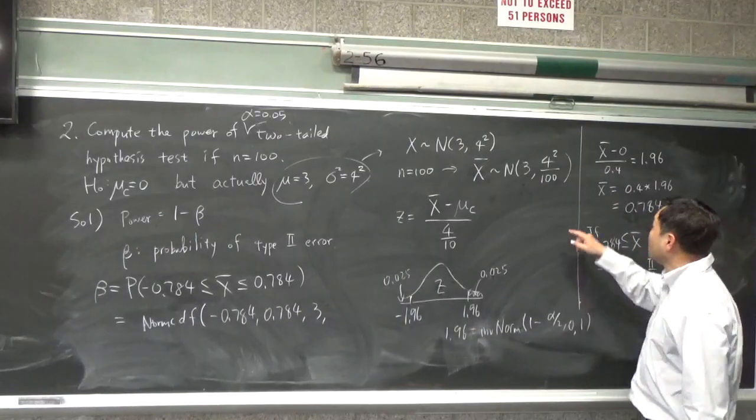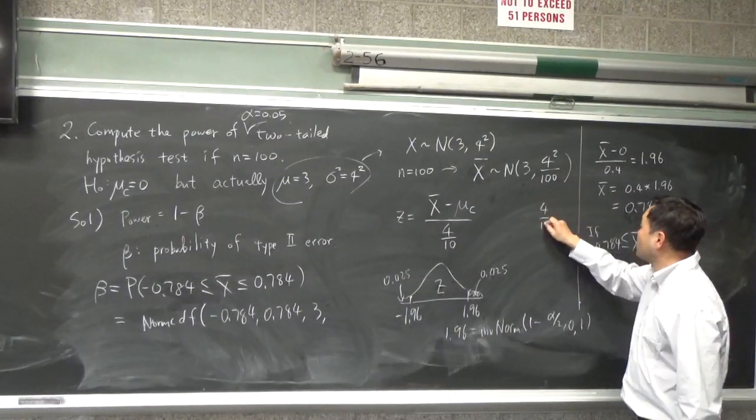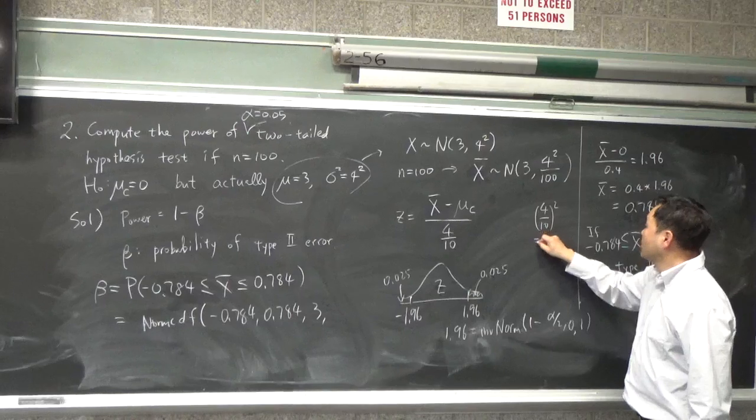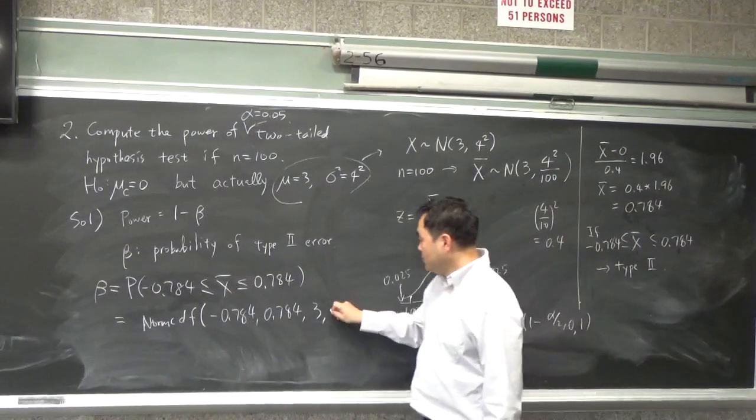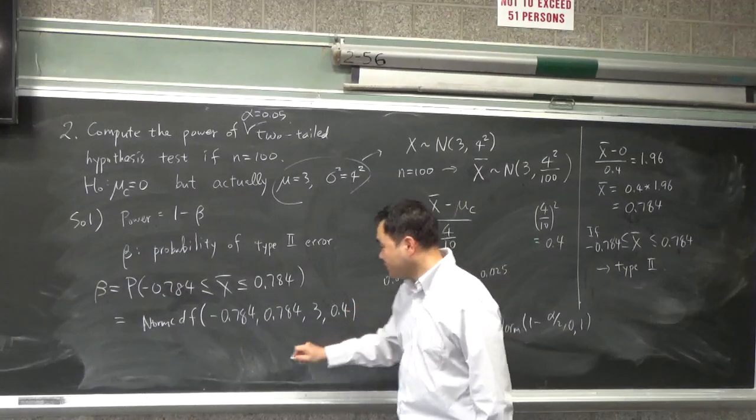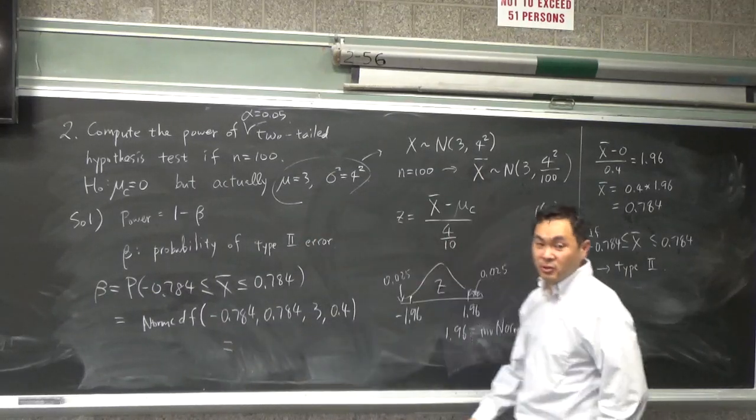And then the standard deviation is, this is 4 over 10 squared, okay? So this is like 0.4. So you have this. Can you tell me what value you get? You should get this very small value.